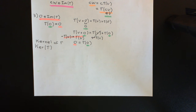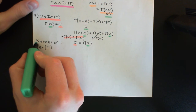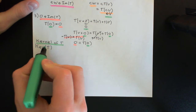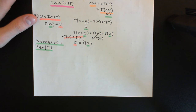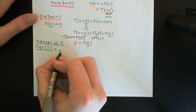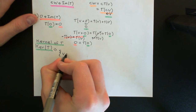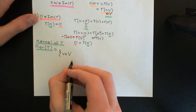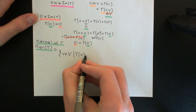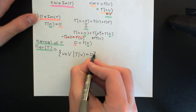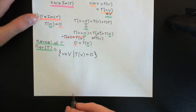So what then is the definition of the kernel of a linear transformation? Well, just as the image of a linear transformation was a subset of the codomain vector space, the kernel of a linear transformation is going to be a subset of the domain vector space. So it's going to be all the vectors v in the domain vector space such that the linear transformation T maps v onto the zero vector in the codomain vector space.